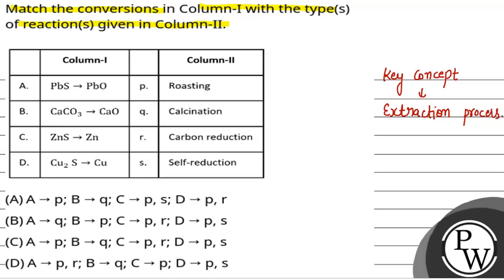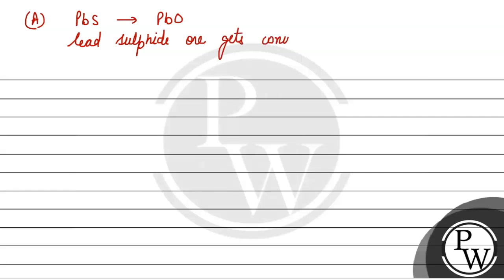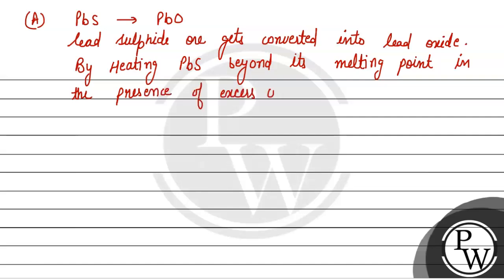We need to find the conversions in column 1 with the type of conversion. First, we have part A of this. Lead sulfide gets converted into lead oxide. This means lead sulfide gets converted into lead oxide.